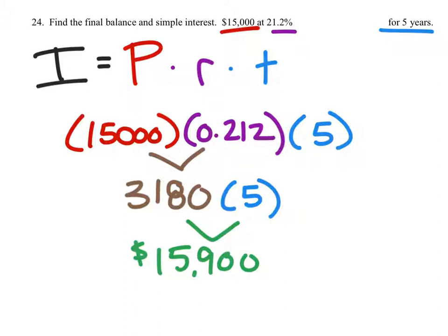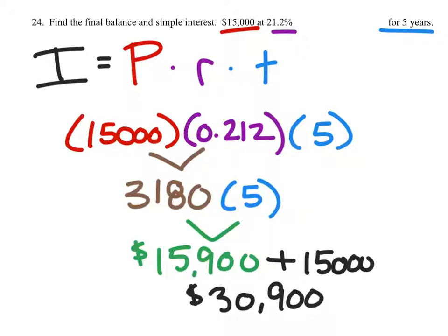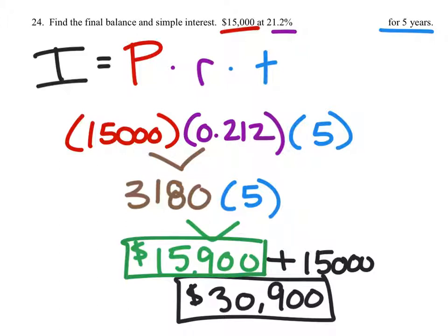Now that's just the simple interest. To find the total balance on this one, I'm going to have to add that to the amount that we put in, which was $15,000. And that gives me $30,900. So those two are the actual answers for this problem because I wanted the final balance and the simple interest.